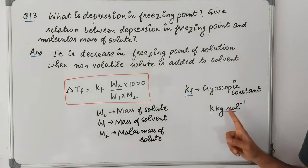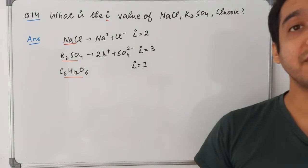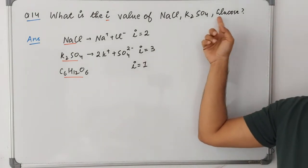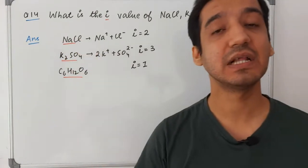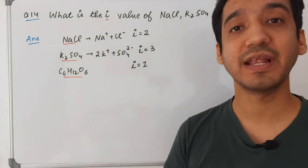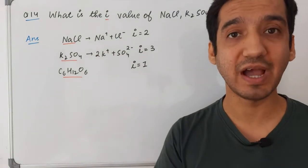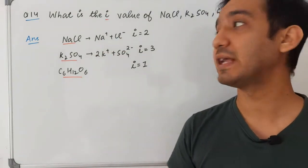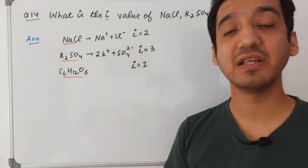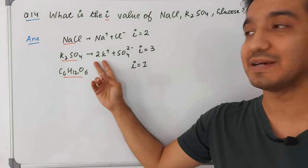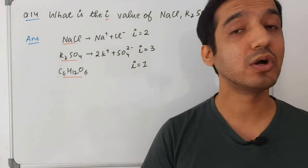Question 14: What is the value of van't Hoff factor (i) for NaCl, K₂SO₄, and glucose? NaCl dissociates into Na⁺ and Cl⁻, giving two ions, so i = 2. K₂SO₄ dissociates into 2K⁺ and SO₄²⁻, giving three ions, so i = 3. Glucose does not dissociate in water, so i = 1.